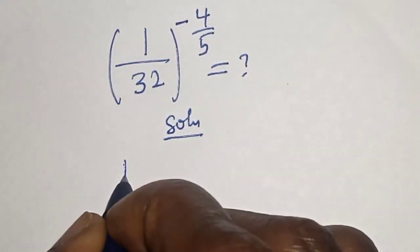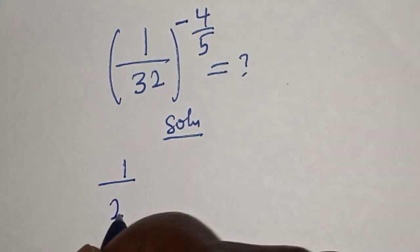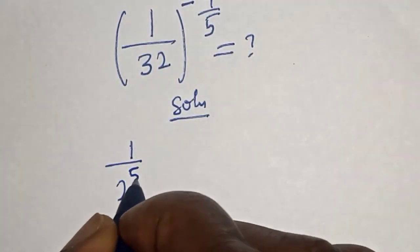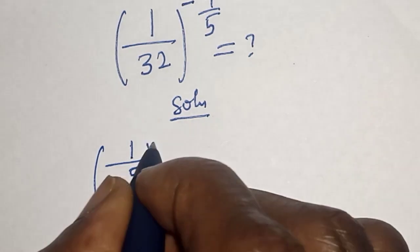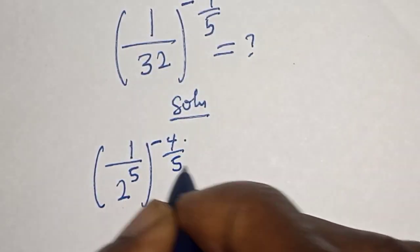1 over 2 raised to power 5, all raised to power minus 4 over 5.